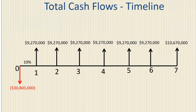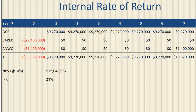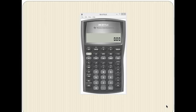Here is the timeline for these cash flows. When we discount these cash flows at 10%, we get a net present value of $15,048,664. The internal rate of return is 23.46%.